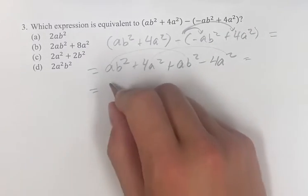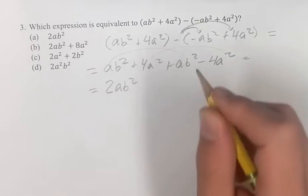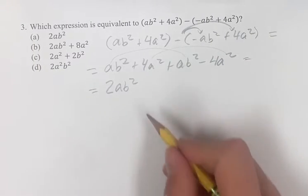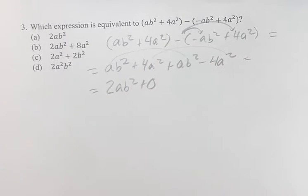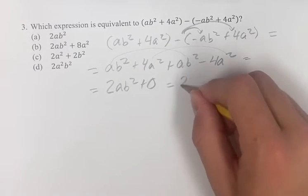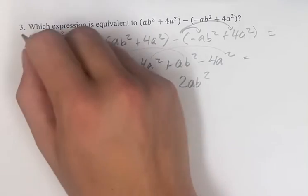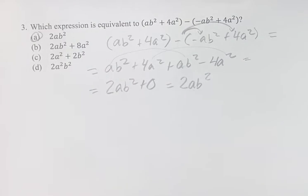So what is ab squared plus ab squared? That's 2ab squared. 4a squared minus 4a squared—subtracting itself, that's just going to be zero. Plus zero obviously doesn't mean anything, so 2ab squared is the final answer. That matches choice (a), and that's going to be the answer.